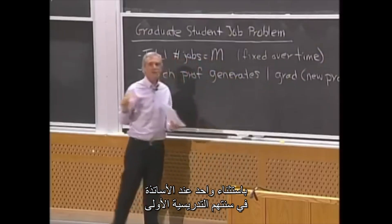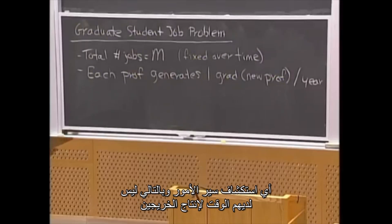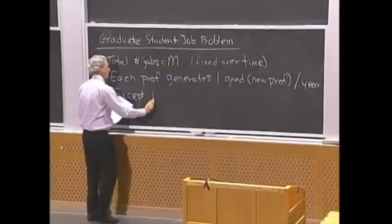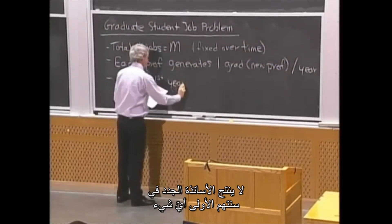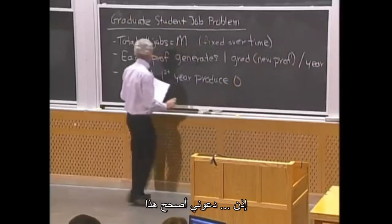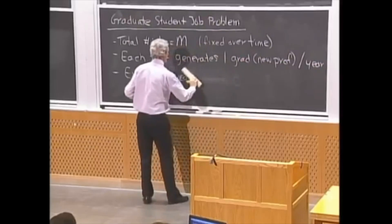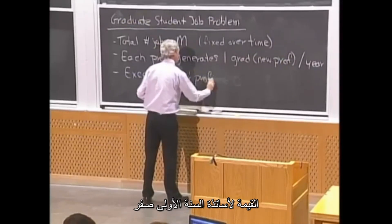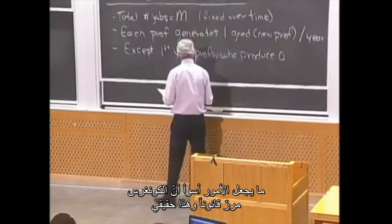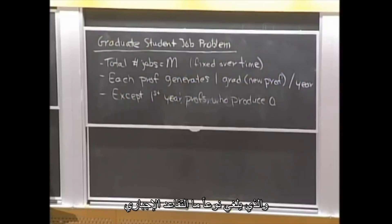With one exception: first-year professors. Because they're too busy learning how to teach, getting grants, doing administrative work, and just figuring out how it all works, they don't have time to produce any grad students. So first-year professors produce zero graduates.